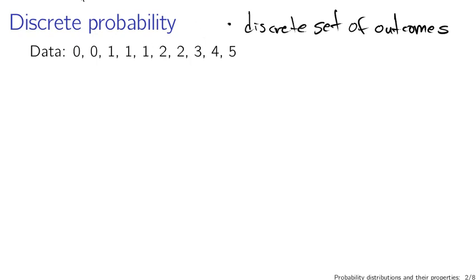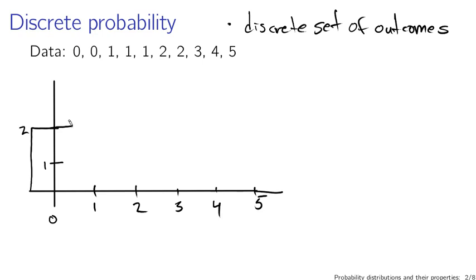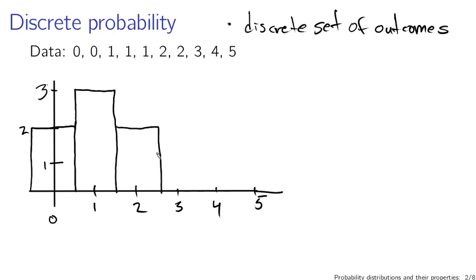The way to think of this in the context of a probability distribution — I like to plot things, so let's make a plot. We have our outcomes: zero, one, two, three, four, and five on the x-axis. We have two people who answered zero, so a bar at zero goes up to two. There were three people that answered one, so a bar goes up to three above the one. Likewise for two: there were two answers. And there were one each for three, four, and five. Our probability distribution looks like this when you plot it.